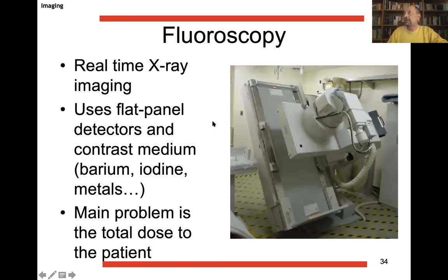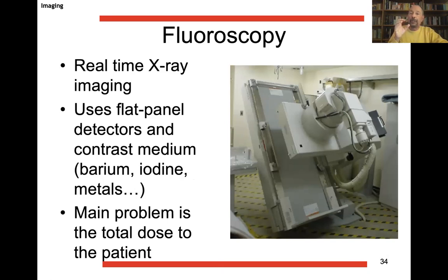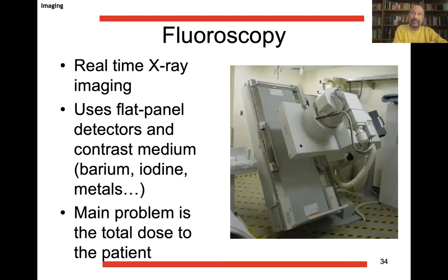Fluoroscopy is a real-time x-ray imaging technique. It uses flat panel detectors and contrast media like barium or iodine. The main problem of fluoroscopy is the total dose to the patient, which can be very high because these films are relatively long. Fluoroscopy is generally used for visualizing live movement of contrast medium in the body, but there are many other applications — for example, in surgery, when you use catheter ablation for ventricular tachycardia you need the image of the heart all the time, and then you use fluoroscopy.